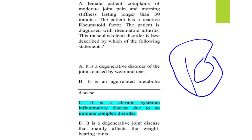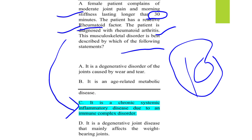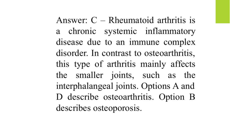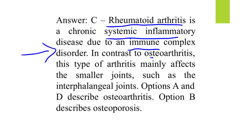MCQ number ten: a female patient complains of moderate joint pain and morning stiffness lasting longer than 30 minutes, with a positive rheumatoid factor. She is diagnosed with rheumatoid arthritis. The correct answer, option C, is that RA is a chronic systemic inflammatory disease due to immune complex disorder. It involves rheumatoid factor, C-reactive protein alterations, and is an autoimmune disease, in contrast to osteoarthritis.